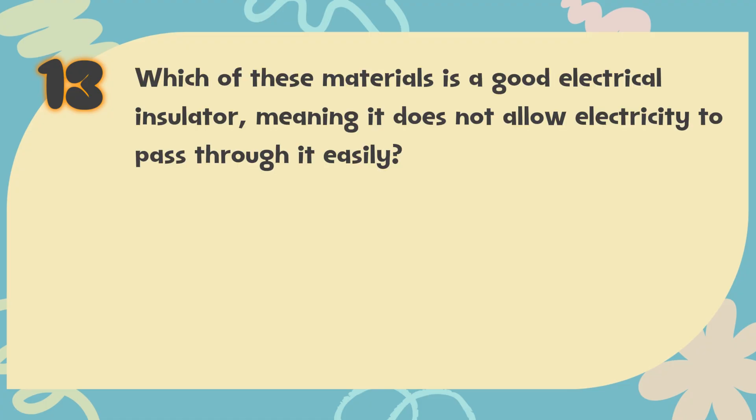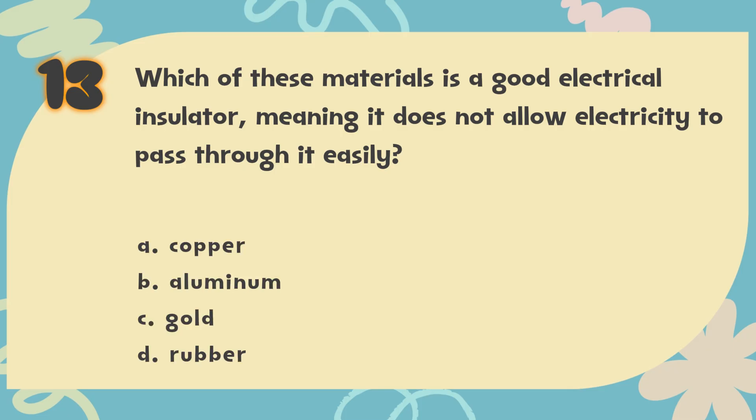Number 13. Which of these materials is a good electrical insulator — meaning it does not allow electricity to pass through it easily? The choices are: A. Copper, B. Aluminum, C. Gold, D. Rubber.